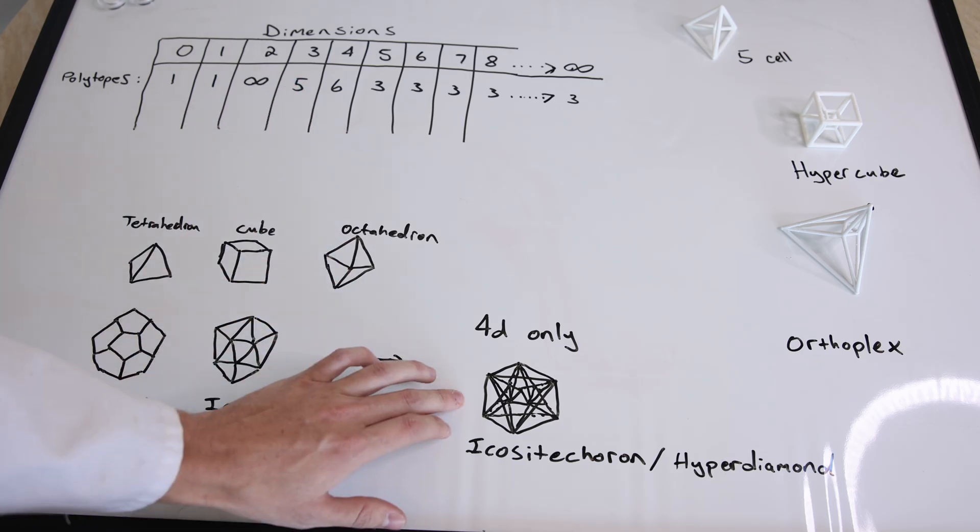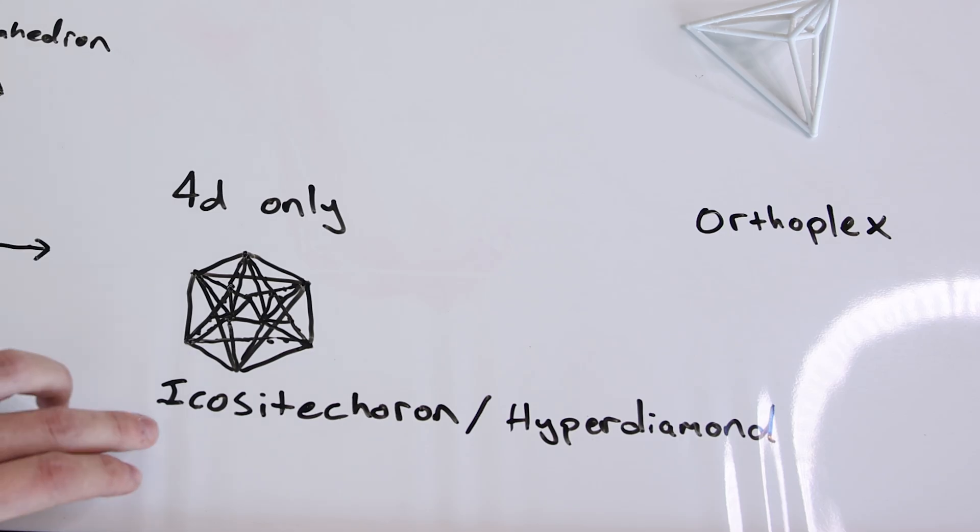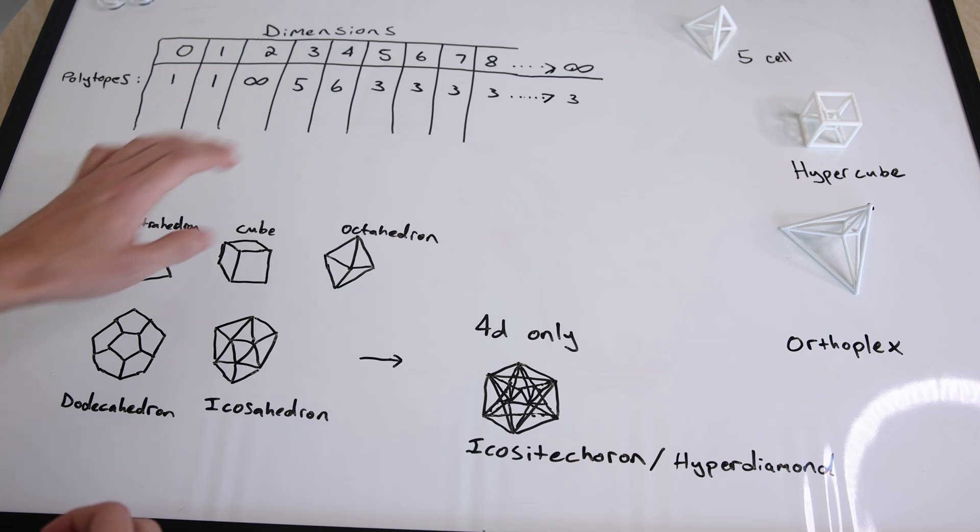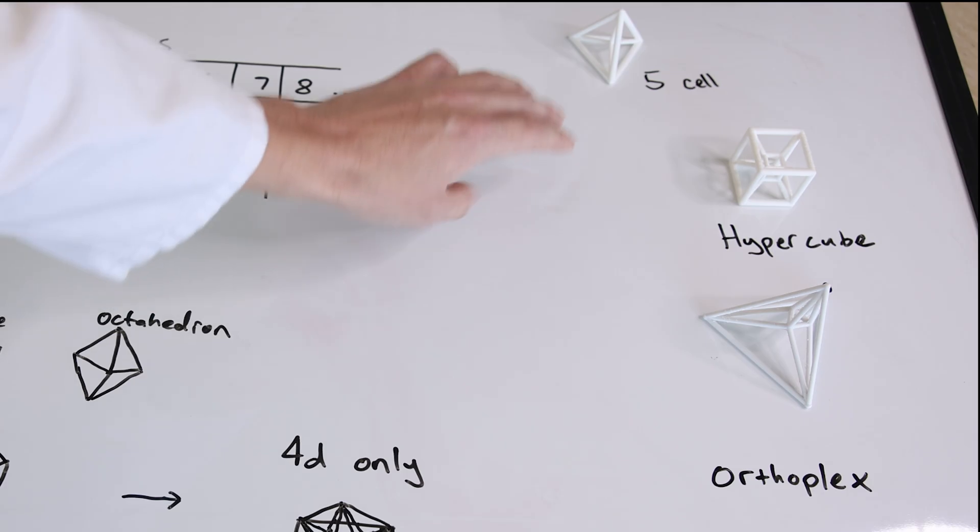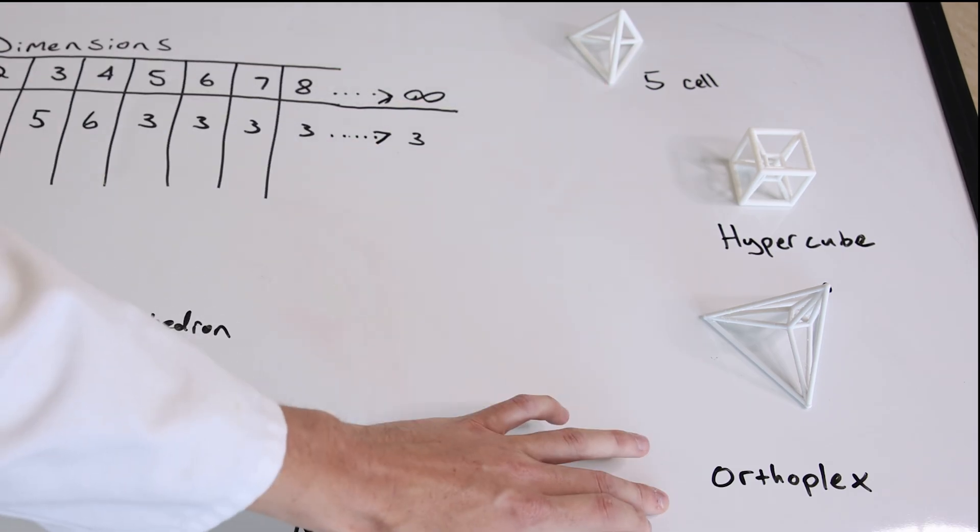In four dimensions we add another 4D-only polytope, the icosatechoron or the hyperdiamond. In five dimensions and up, we only have these three: the five-cell, the hypercube, and the orthoplex.